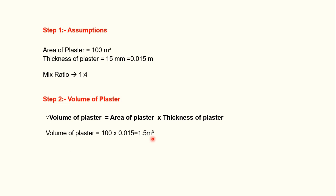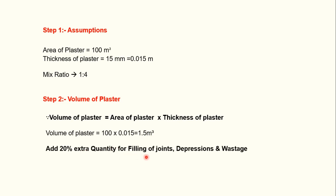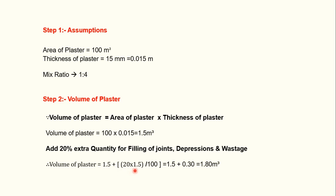I add 20% extra quantity for filling of joints, depressions, and wastage. Therefore volume of plaster equals 1.5 plus (20 × 1.5 / 100), which equals 1.5 plus 0.30, giving us 1.80 cubic meters. This volume is the wet volume — the volume of plaster after mixing with water.